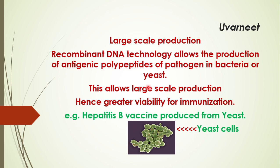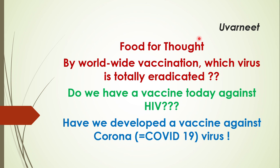Here is food for thought: Number one — by worldwide vaccination, which virus has been totally eradicated? Number two — do we have a vaccine today against HIV? Number three — have we developed a vaccine against the COVID-19 coronavirus virus? If not, why? Even with such great advancements in biotechnology worldwide, how is it that after more than four months we are still unable to develop a vaccine against COVID-19?